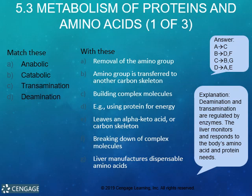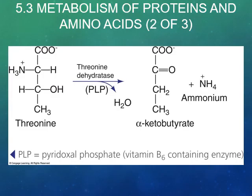Be familiar with the terms anabolic, catabolic, transamination, and deamination — see if you can match these terms with the definitions. This is an example of deamination of the amino acid threonine. Threonine is an essential indispensable amino acid that, when deaminated, produces water, ammonium, and an alpha-keto acid — in this case, alpha-ketobutyrate.